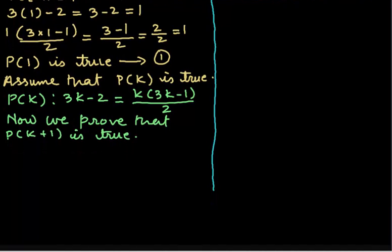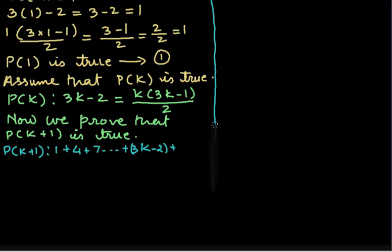P(k + 1) is such that 1 + 4 + 7 + ... + (3k - 2) plus the next term, which is 3 times (k + 1) minus 2.